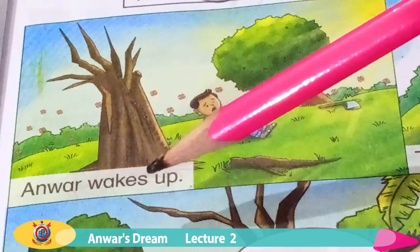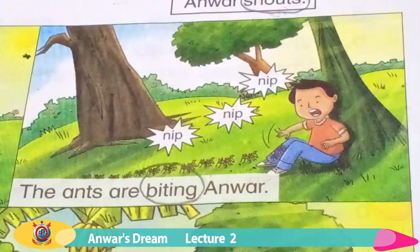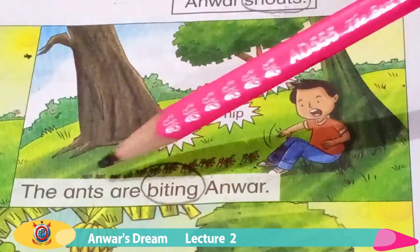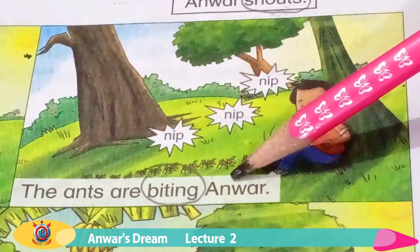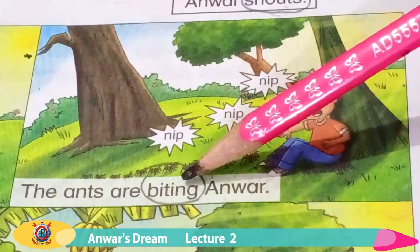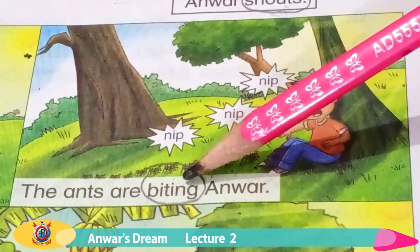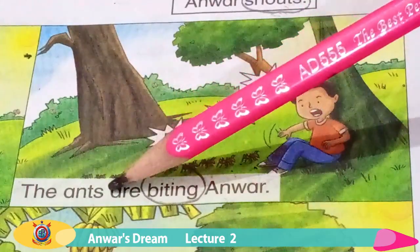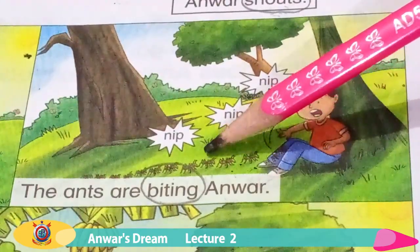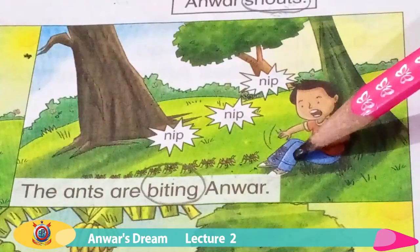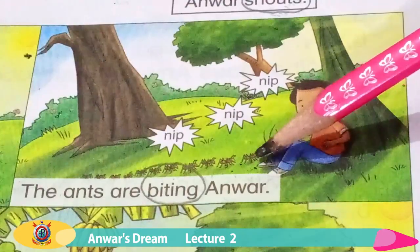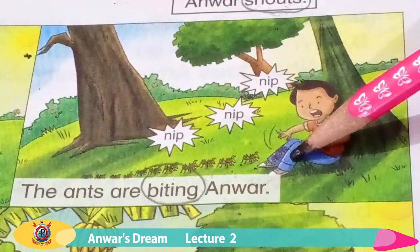Anwar wakes up. So, what is happening here? The ants are biting Anwar. Biting — daanton se kaatna. The ants are biting Anwar. Can you see the ants? Yes, these are the ants and they are biting Anwar. Nip, nip, nip. Ants Anwar ko kaat rahi hain.